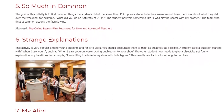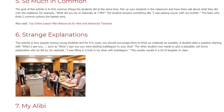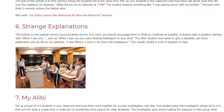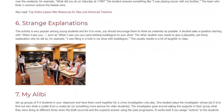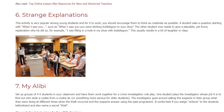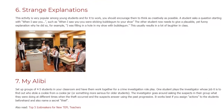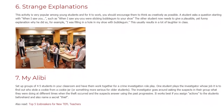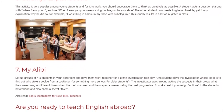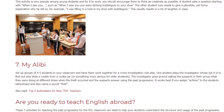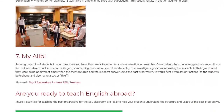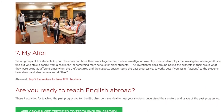Activity 7: My Alibi. Set up groups of four or five students in your classroom and have them work together for a crime investigation role play. One student plays the investigator whose job it is to find out who stole a cookie from a cookie jar, or something more serious for older students. The investigator goes around asking the suspects what they were doing at different times when the theft occurred, and the suspects answer using the past progressive. It works best if you assign actions to the students beforehand and also name a secret thief.